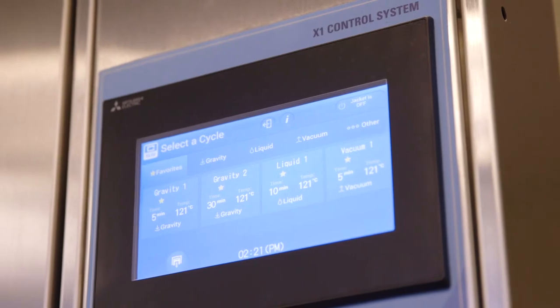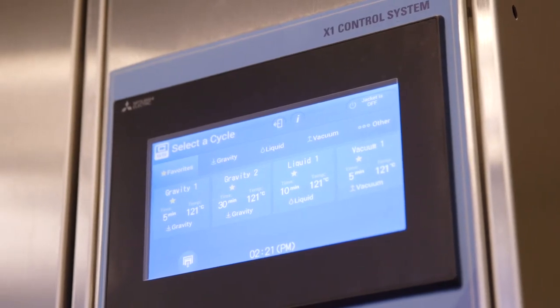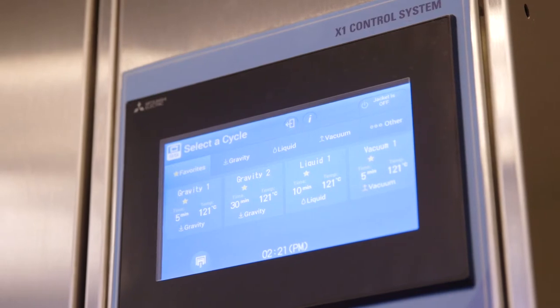The vertical sliding door autoclave features our easy-to-use, state-of-the-art X1 control system, which enables you to program up to 50 sterilization cycles and tag your favorite cycles for easy recall.